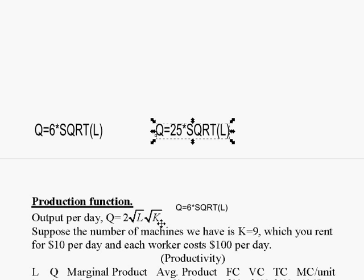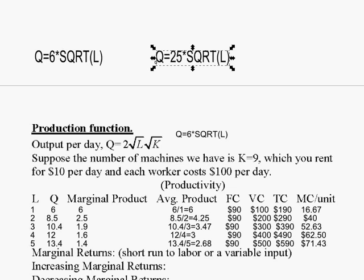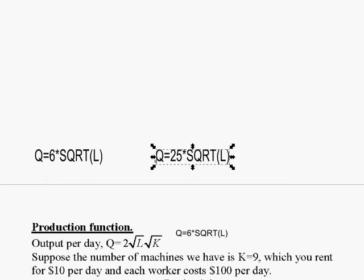So going back to this production function, q is 2 times the square root of the number of workers times the square root of the number of machines. So what we had last time was 9 machines and we saw that that equation simplified to q equals 6 times the square root of the number of workers.